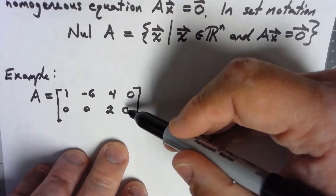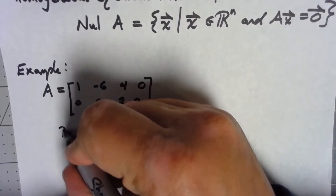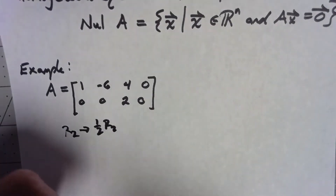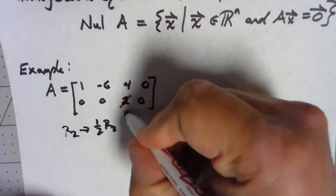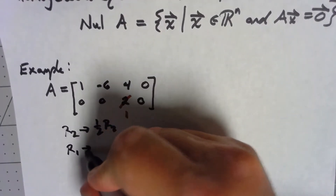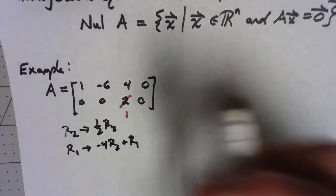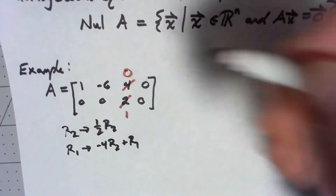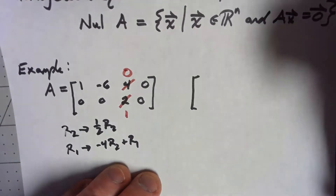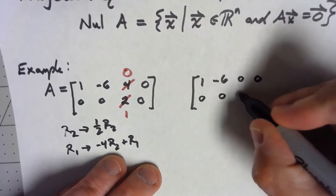This is a simple matrix, so there's not a lot to do. Row 2 becomes one-half of row 2, which changes that 2 to a 1. Then row 1 becomes negative 4 times row 2 added to row 1, which changes that 4 to a 0. In reduced row echelon form we get: 1, negative 6, 0, 0 in the first row and 0, 0, 1, 0 in the second row.